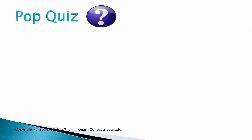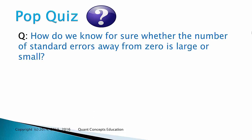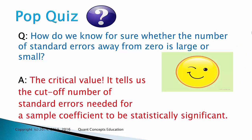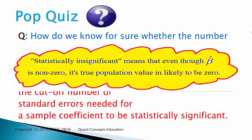Time for a pop quiz: how do we know for sure whether the number of standard errors away from 0 is large or small? That is, how many standard errors until we conclude that sample beta hat is too close to 0? Well, we use the critical value. It tells us the number of standard errors needed for a sample coefficient to be statistically significant — that is, for it to be statistically different from 0. Statistically insignificant means that even though beta hat is non-zero, its true population value is likely to be 0.